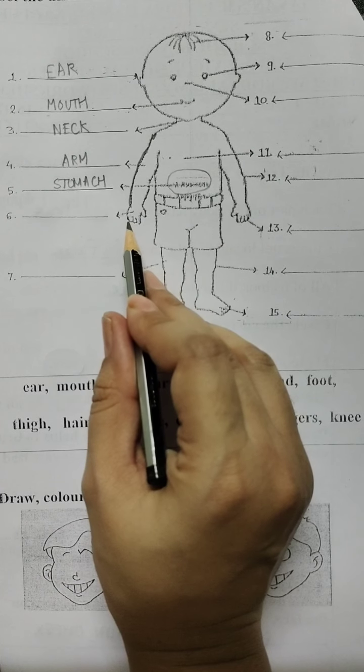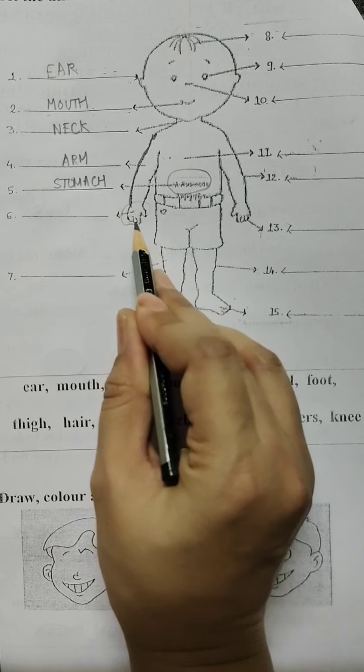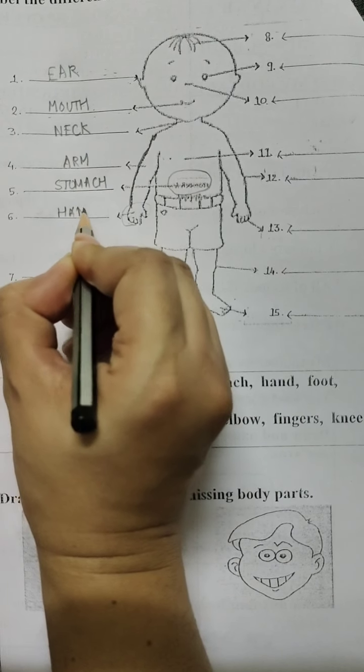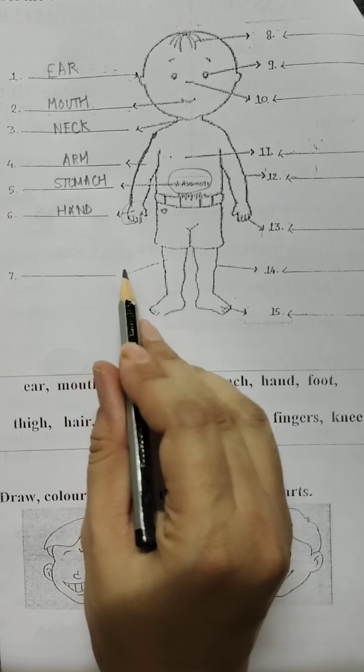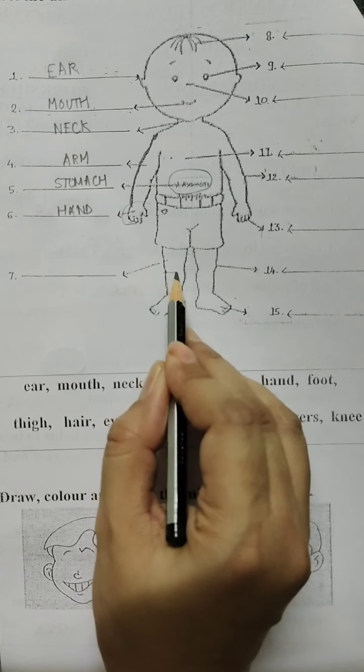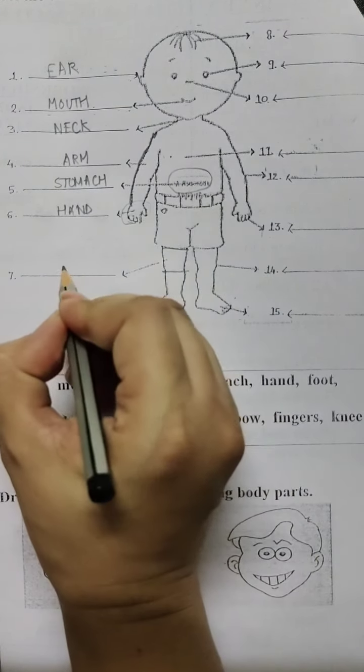Now students, the next body part that is given here is the hand. This is the hand, so we will write hand here. Now the next body part, this is the thigh. Above the knee and below the hip, this portion is known as the thigh.